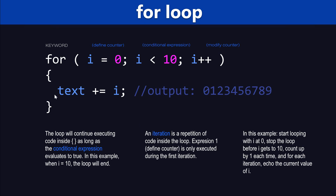This is what the syntax for the for loop looks like. We start out with the keyword for, followed by round brackets. Inside the round brackets we have a definition of the counter, which is the value that we're going to start looping from, and then we separate that with a semicolon, followed by the conditional expression — the expression that our loop will continue executing the code inside the curly brackets until this conditional expression is matched.